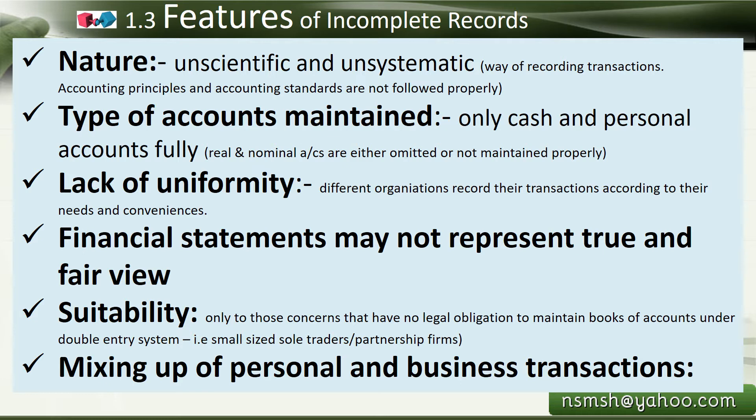Lack of uniformity: different organizations record their transactions according to their own needs and conveniences; no uniform system is used. Financial statements may not represent a true and fair view because records are incomplete — the profit and loss account and balance sheet may be unreliable. Suitability: as per company law, company accounts cannot be maintained under incomplete records. It is only suitable for smaller organizations such as sole traders and partnership firms that have no legal obligation to maintain books under the double-entry system.